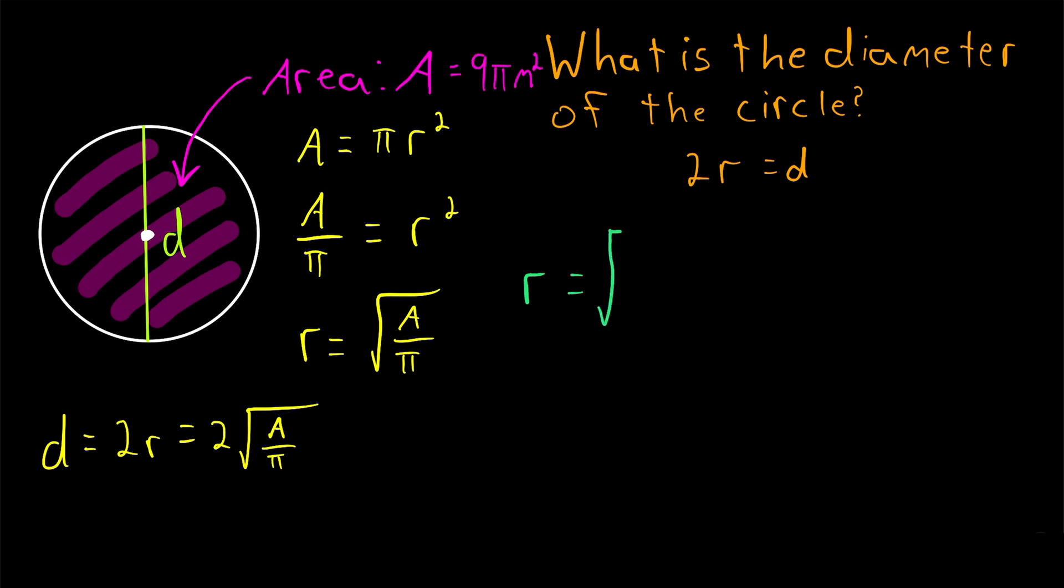So the radius of the circle is equal to the square root of the area divided by pi. That's the square root of 9 pi meters squared divided by pi. Now what is this equal to?